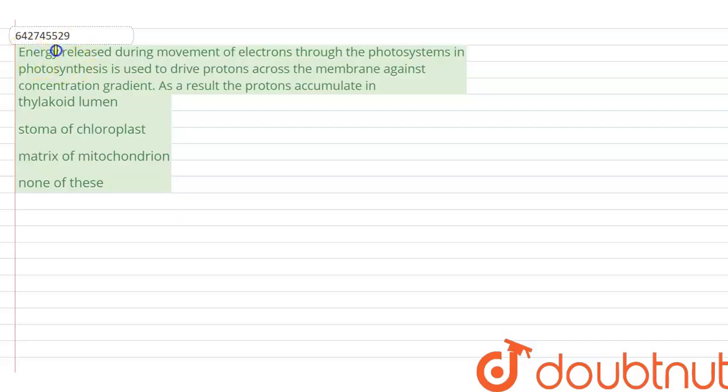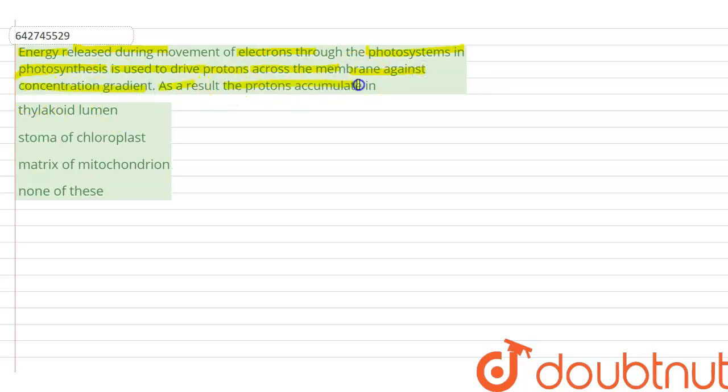The question is, energy released during the movement of electrons through the photosystems in photosynthesis is used to drive protons across the membrane against the concentration gradient. As a result, the proton accumulates in which of the following, and then we are given four options.